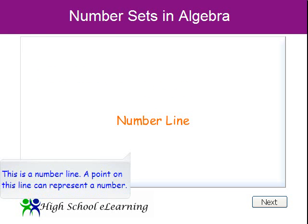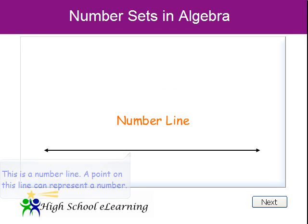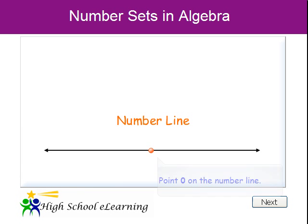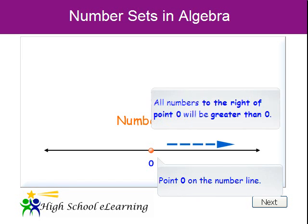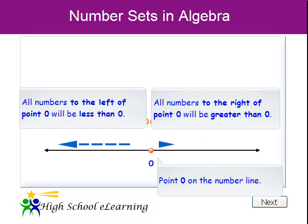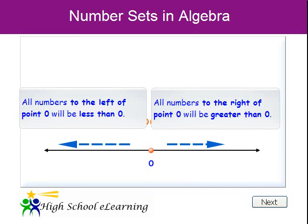This is a number line. A point on this line can represent a number. Let's place this point here — we'll call this point zero on the number line. On the number line, numbers get larger going to the right, so all the numbers to the right of point zero will be greater than zero. Numbers get smaller going to the left, so all the numbers to the left of point zero will be less than zero.